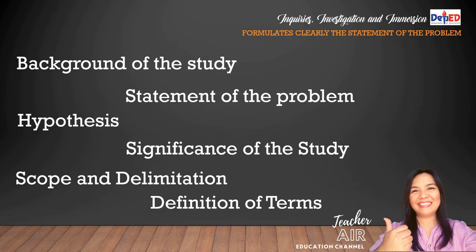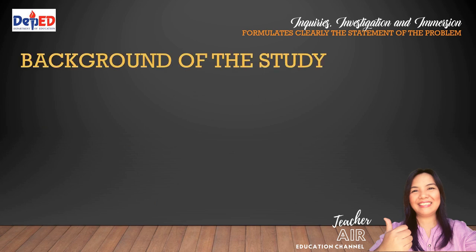Now that you have formulated a problem, the next step is to accomplish the baseline of your research paper. You must explain the context of your study by giving its background, which may aid you in identifying specific questions for your statement of the problem as well as your hypothesis. There is also a need to list down the beneficiaries of your research, presented in the significance of the study. You must also set the boundaries by writing your scope and delimitation, and furnish a definition of terms to facilitate understanding.